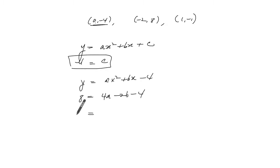Bring the 4 over, you get 12: 4a - 2b = 12, divide through by 2.